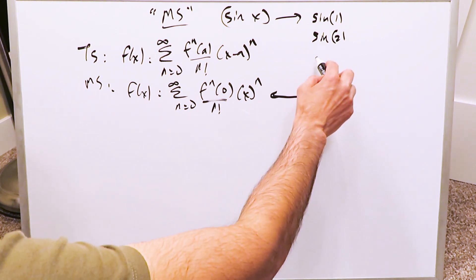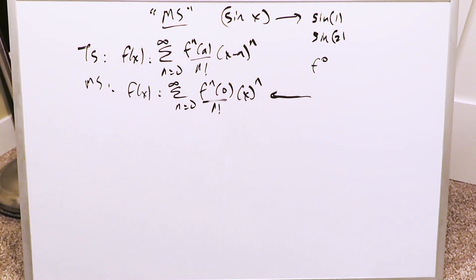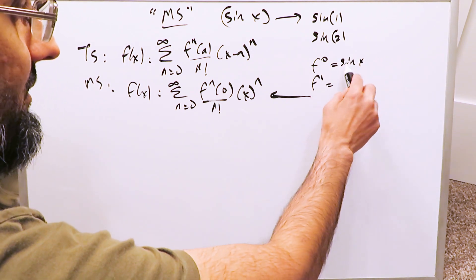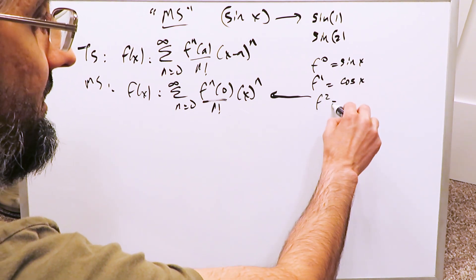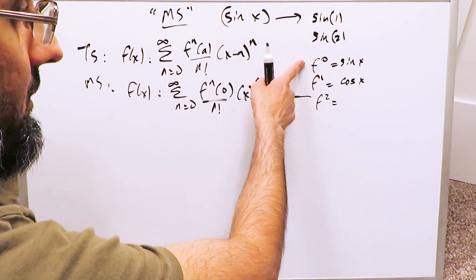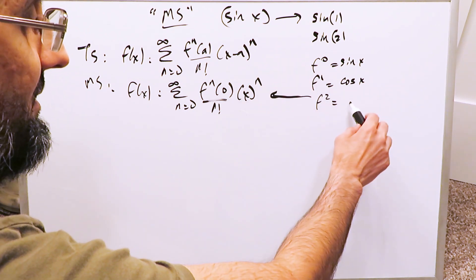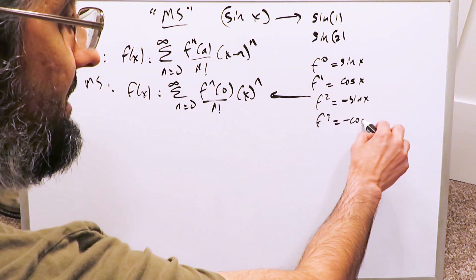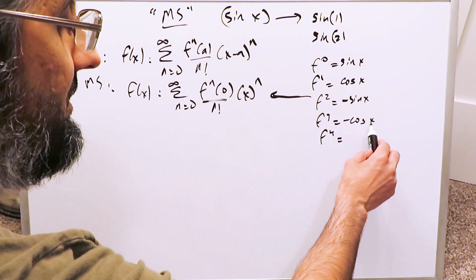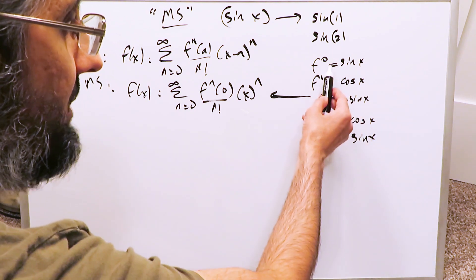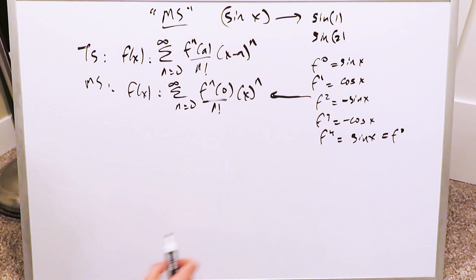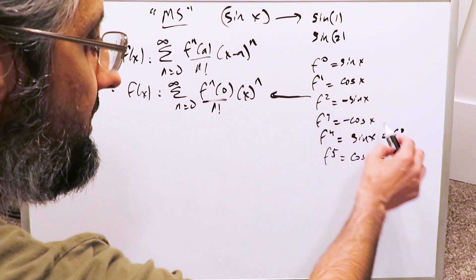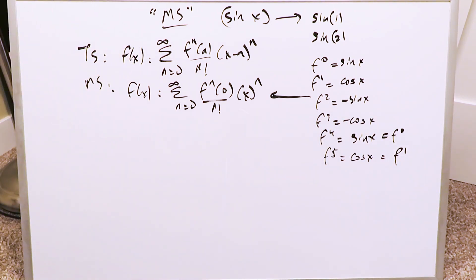You want to start with the determination of your derivatives. If f of x equals sine x, you have to compute a certain number of ordered derivatives — we'll do up to 5. The 0th order derivative of sine x is just sine x. The 1st order derivative is cosine x. The 2nd order derivative is minus sine x. The 3rd order derivative is minus cosine x. The 4th order derivative is sine x — we've cycled back to the original, equal to the 0th order derivative. The 5th order derivative is cosine x, equal to the 1st order derivative. You see how things recycle.